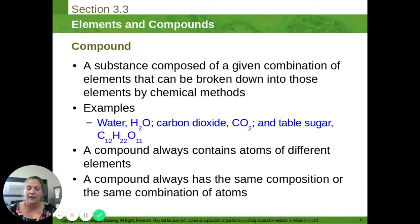Compounds are always going to have to contain more than one element, so two or more. If it's not two or more, then it's just an element, it's not a compound. And any compound has to always have the same combination of atoms. H2O water cannot have H4O, it's not water anymore. So it's what we call definite composition.